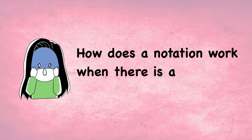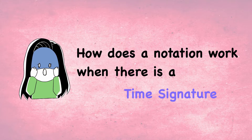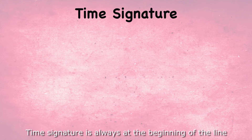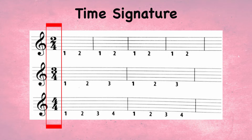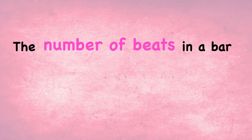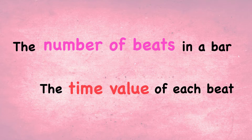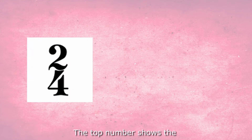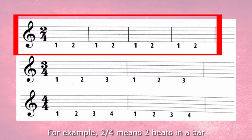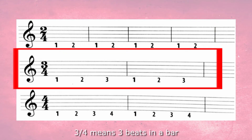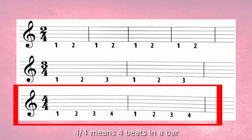So how does notation work when there is a time signature? The time signature is always at the beginning of the line, to indicate the number of beats in a bar and the time value of each beat. The top number shows the number of beats. For example, 2/4 means 2 beats in a bar, 3/4 means 3 beats in a bar, 4/4 means 4 beats in a bar.